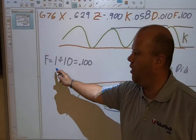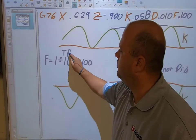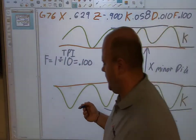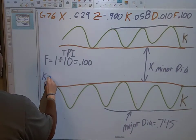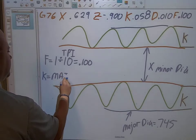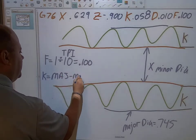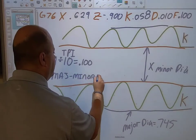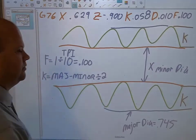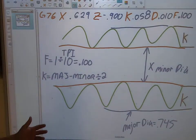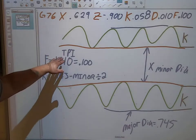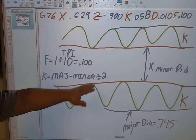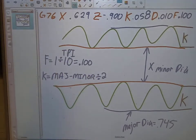To summarize the formulas: feed rate equals 1 divided by threads per inch, and K equals major diameter minus minor diameter, divided by two. So now I have my feed rate, my thread height K, my minor diameter X, and my depth of cut D — that's pretty much everything we need.